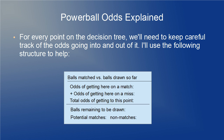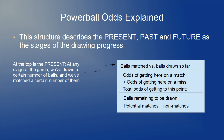I will use the following structure to help. On the top: balls matched versus balls drawn so far — it is basically for keeping score. In the center: the odds of getting to this point. At the bottom: a tally of the balls remaining, from which the odds pertaining to the next draw follow. Essentially, this structure describes the past, present, and future as stages of the drawing progress.